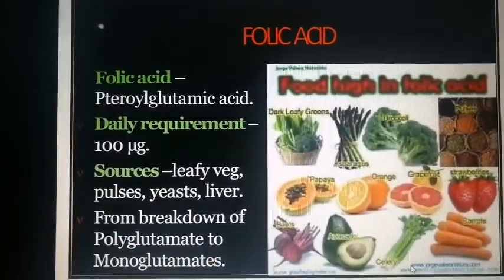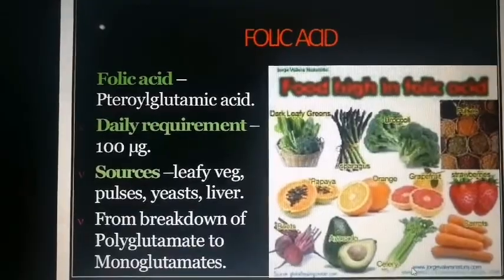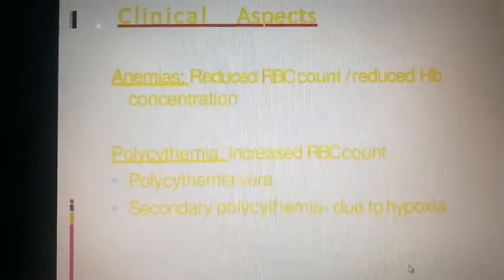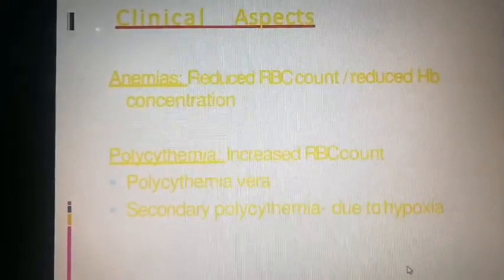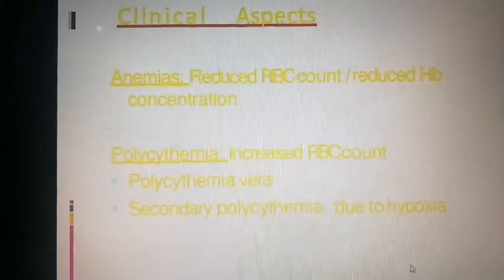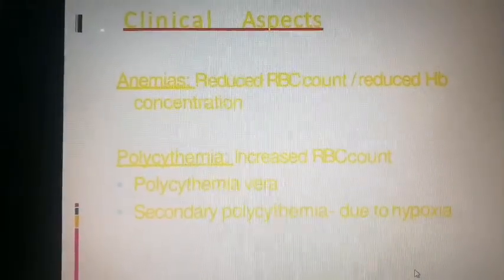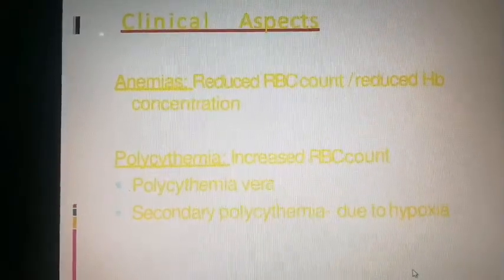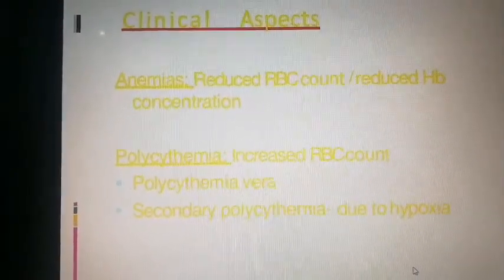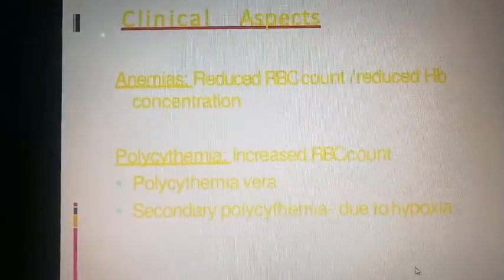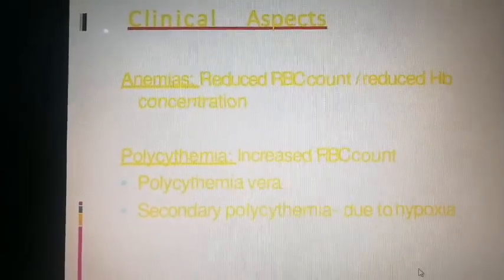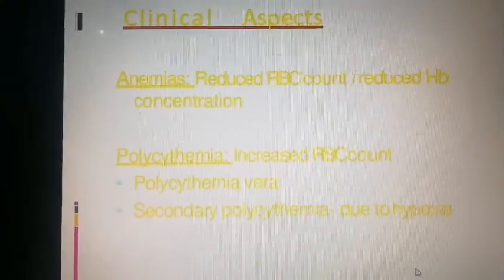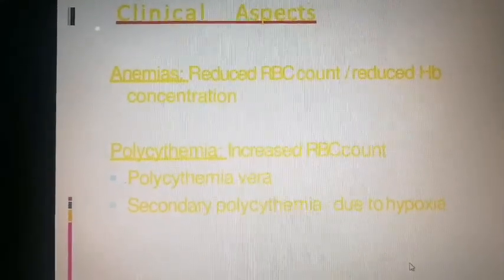Folic acid has a daily requirement of 100 micrograms, sourced from leafy vegetables, pulses, yeast, and liver, through breakdown of polyglutamates to monoglutamates. Clinical aspects of anemia include reduced RBC count, reduced hemoglobin concentration, and reduced packed cell volume or hematocrit. Polycythemia refers to an increase in RBC count, which can occur due to hypoxia — this will be discussed in detail in the lecture on anemia.